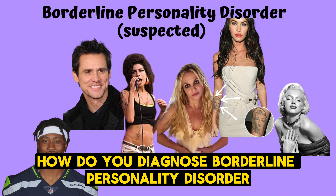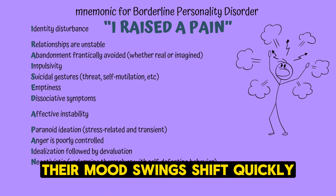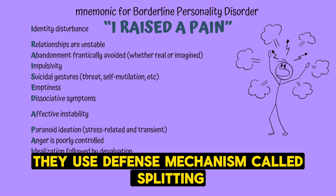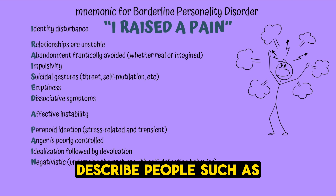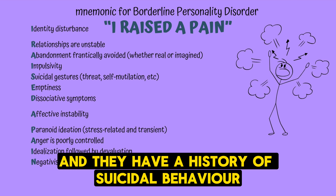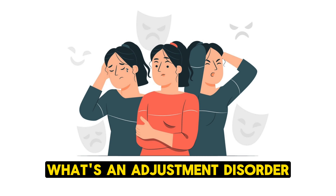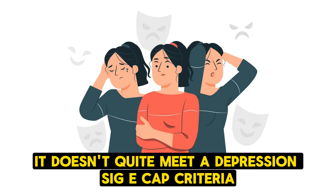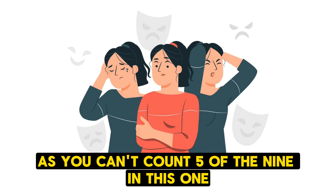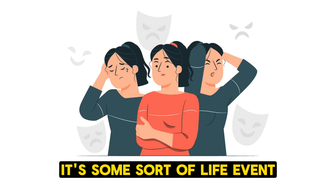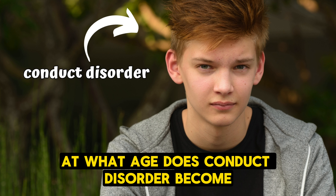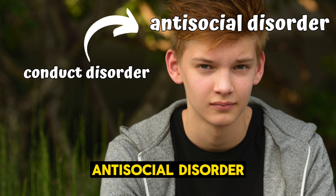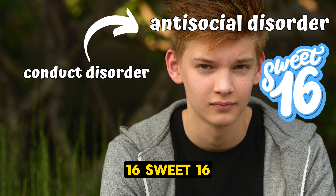How do you diagnose borderline personality disorder? Mood swings shift quickly, they use the defense mechanism of splitting, use extreme language like 'they're terrible' or 'they're amazing,' and have a history of suicidal ideation. An adjustment disorder doesn't meet depression SIG E CAPS criteria and involves a life event that occurred less than three months ago. Conduct disorder becomes antisocial personality disorder at age 16.